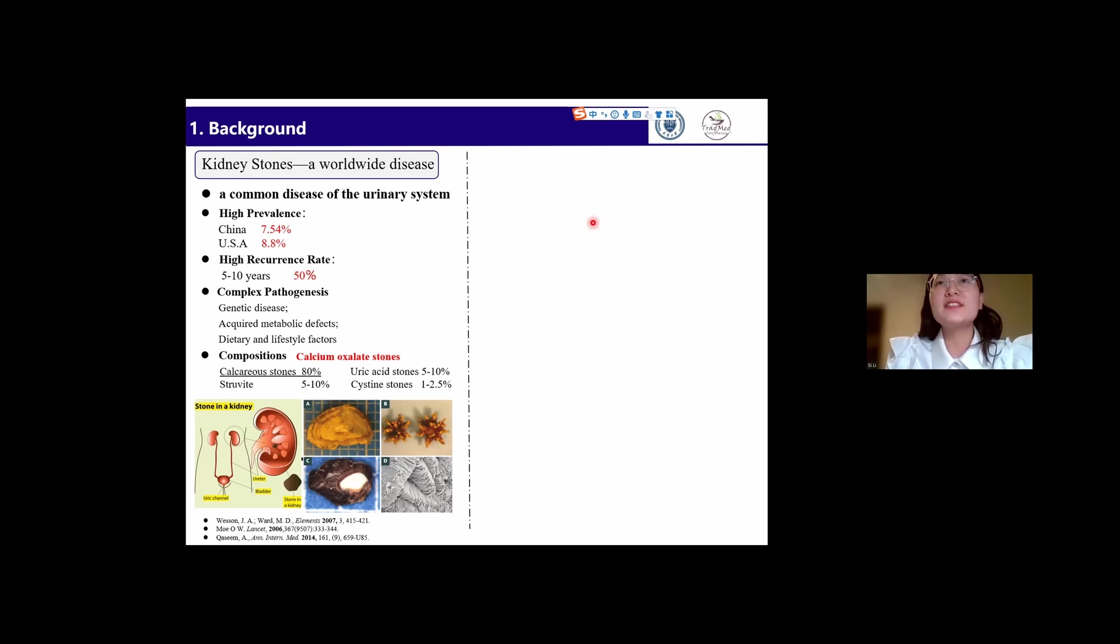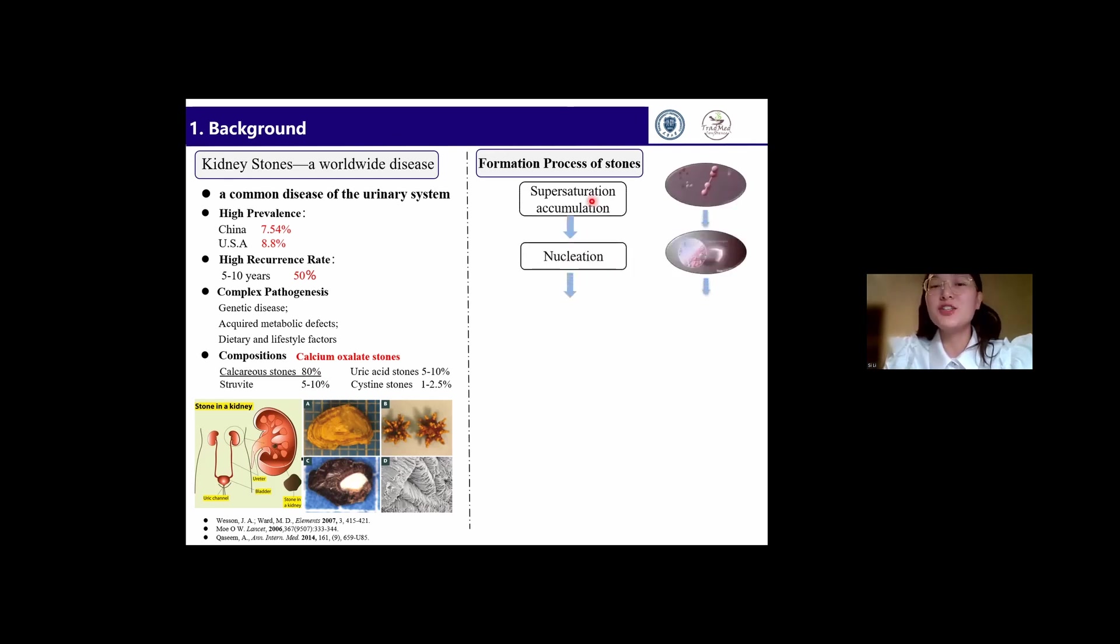To be honest, the primary formation process of stones is like a simple crystallization process. Firstly, the supersaturation of lithogenic solute accumulates in urine, which leads to nucleation of crystals. Then crystal growth, aggregation, and finally form large particles in kidney.